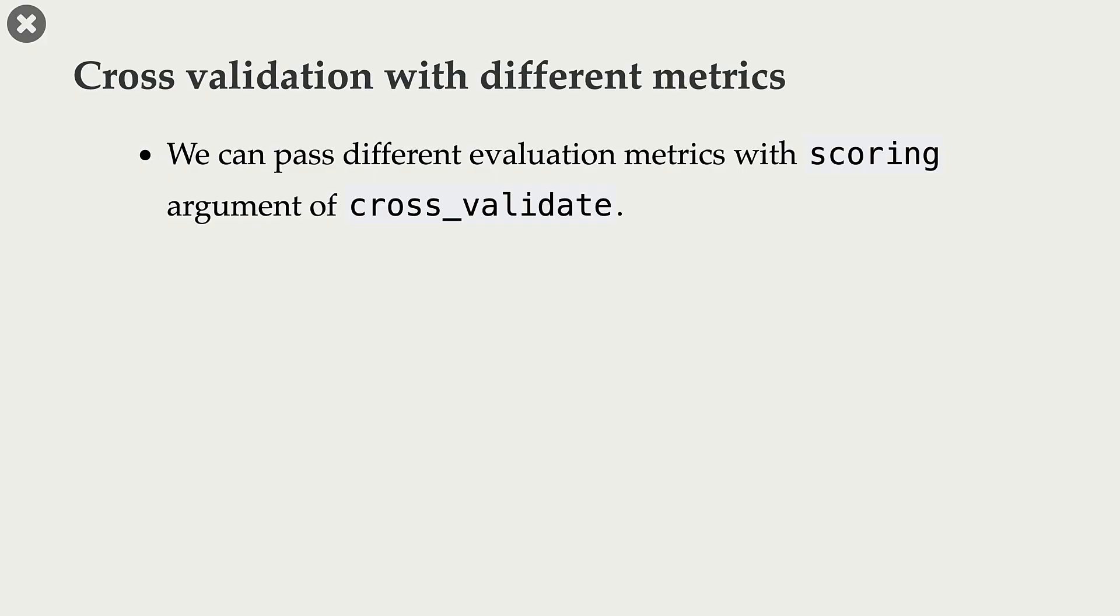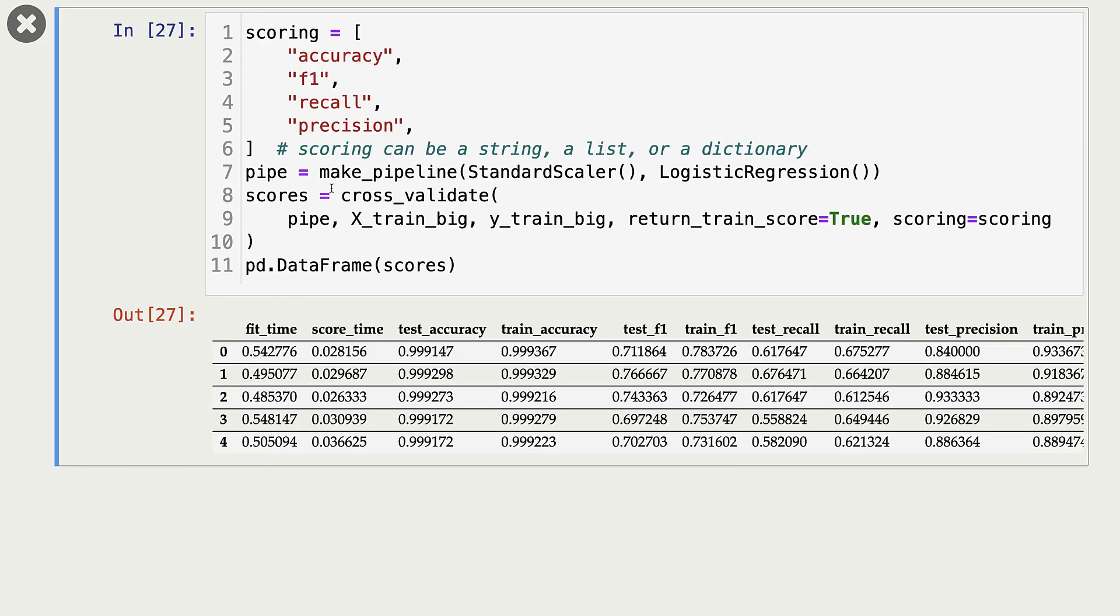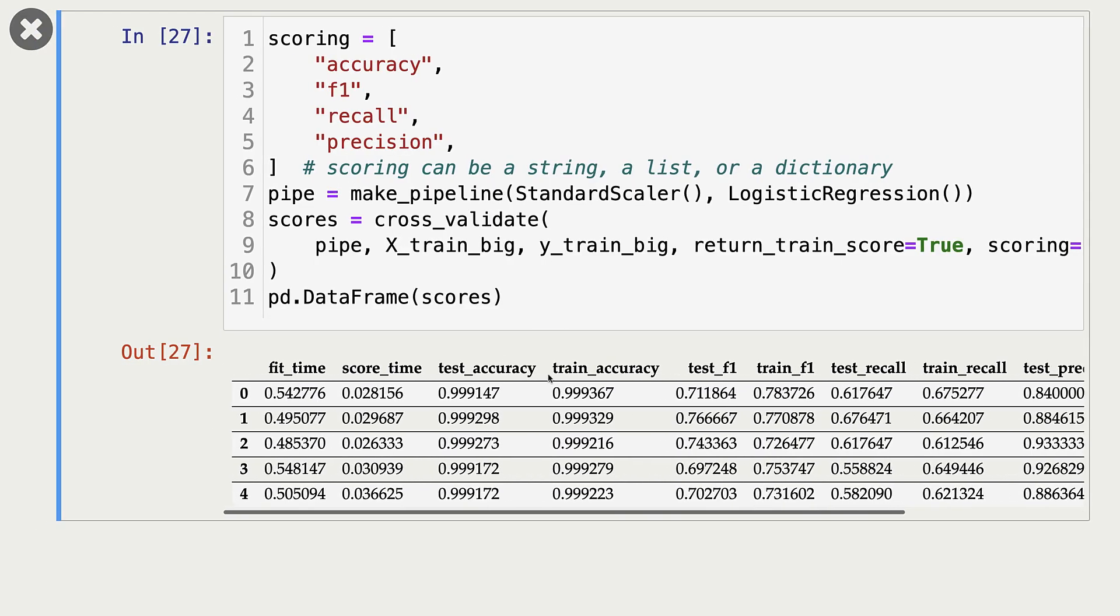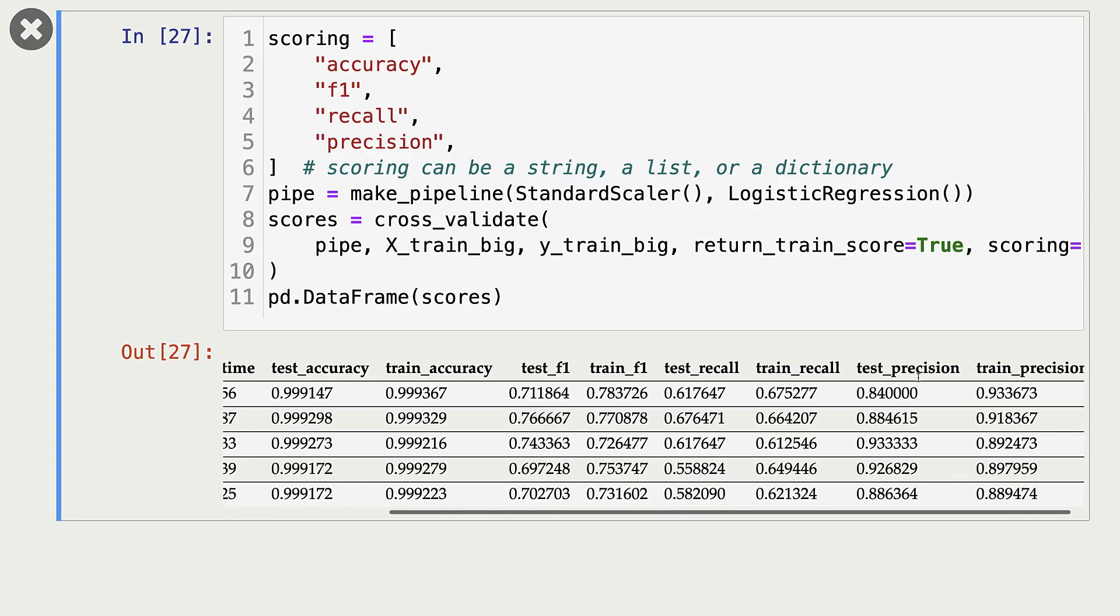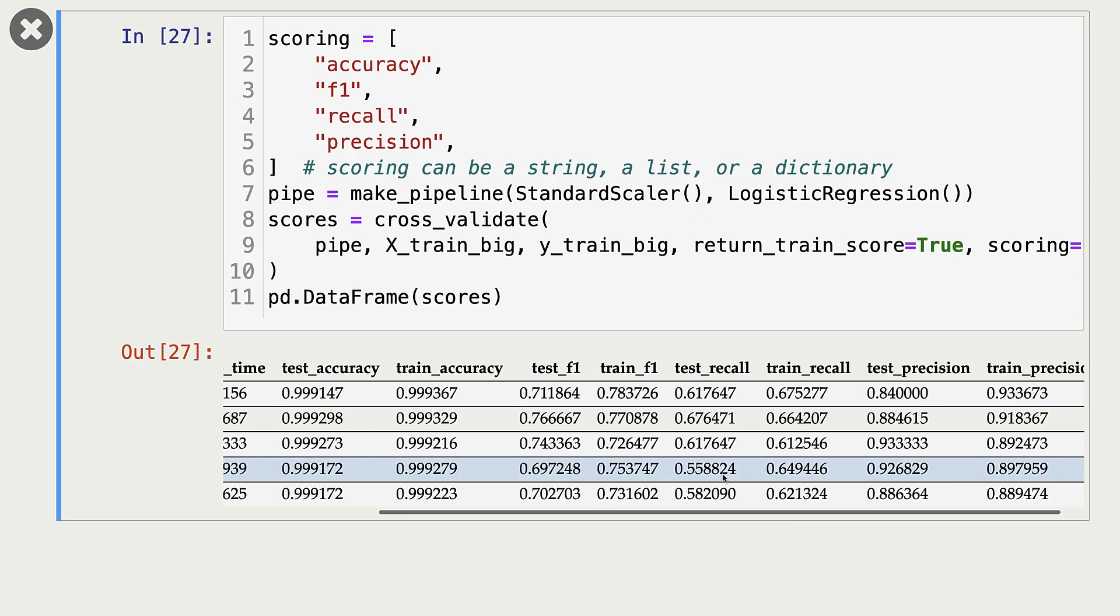Cross-validate by default uses accuracy as the scoring metric, but we can pass other scoring metrics to cross-validate using this scoring parameter. In this particular case, I'm passing accuracy, F1 score, recall, and precision to this scoring. And when I call cross-validate now, I get validation accuracy, train accuracy, validation F1 score, train F1 score, validation recall, train recall, validation precision, and train precision. So I'm getting all these different metrics for my train and validation splits in each fold.